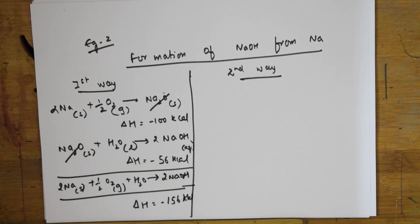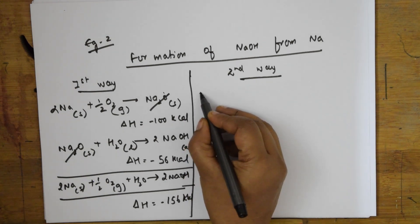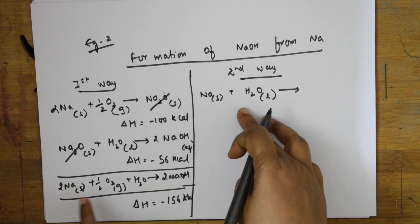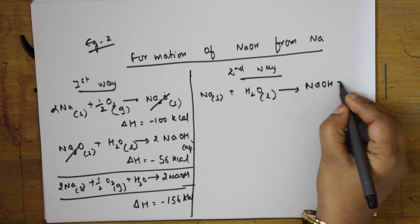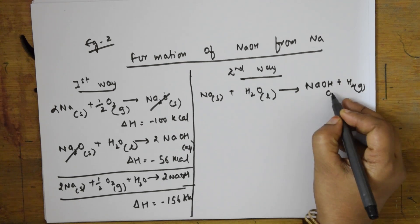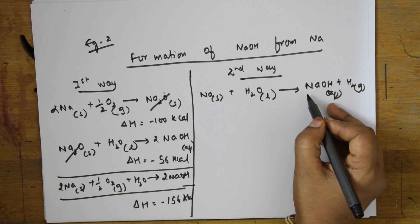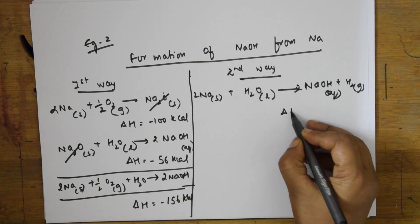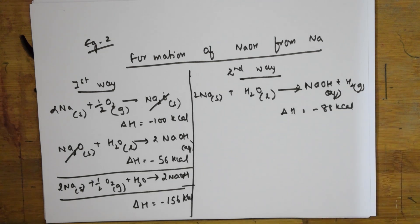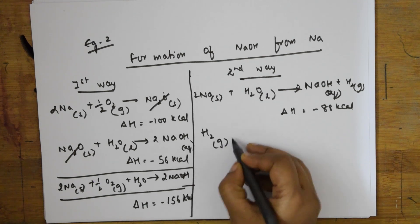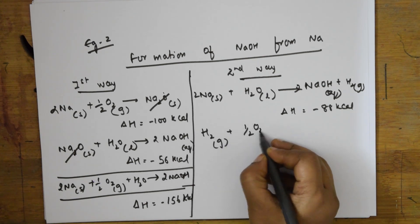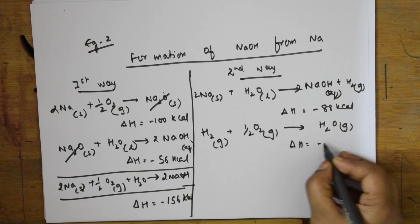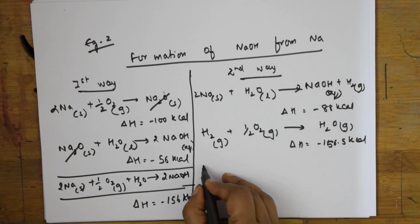In the second way, 2 Na (solid) combines directly with water (liquid) to form sodium hydroxide (aqueous) and hydrogen gas, with ΔH = −88 kcal. Then the hydrogen gas (gaseous) combines with oxygen (gas) to form water, with ΔH = −68.5 kcal.